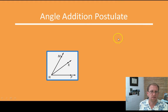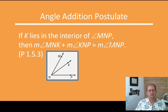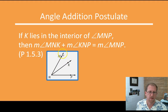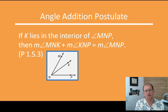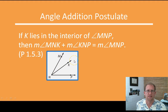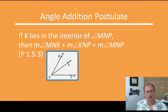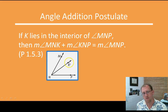Here's the angle addition postulate. If a ray is formed in the interior of an angle, you can add up the two smaller angles and get the measure of the greater angle. It's a lot like segment addition — the measure of angle MNK plus the measure of angle KNP equals the measure of angle MNP. So you can add two smaller adjacent angles and get the measure of the larger angle.